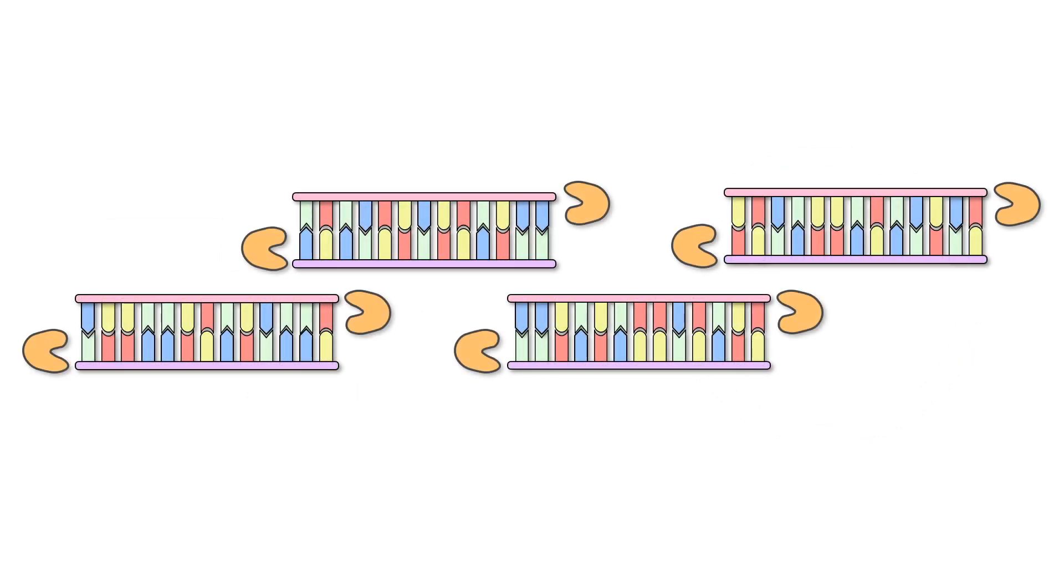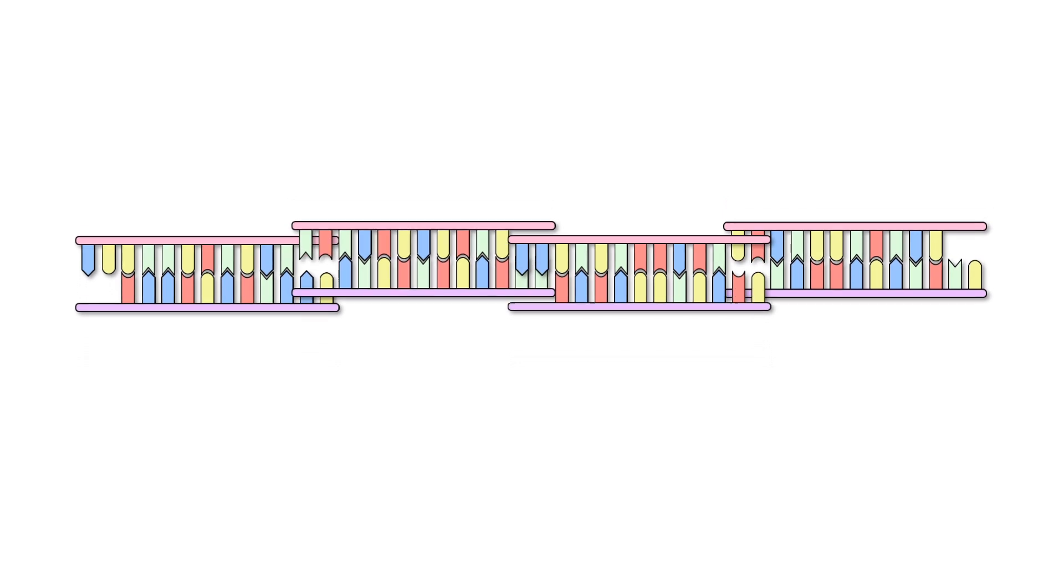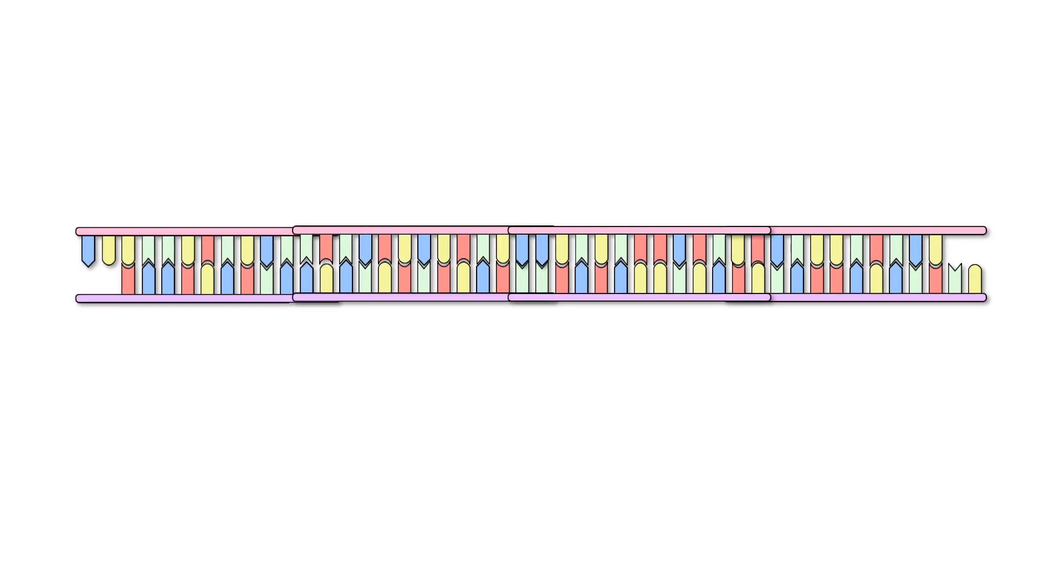To do this, an exonuclease was used to chew back the three-prime overlap sequences to expose an overhang complementary to the five-prime end of the adjacent DNA fragment. Heating then cooling the reaction annealed the overlapping regions together, and DNA polymerase and ligase were used to repair the annealed joints.